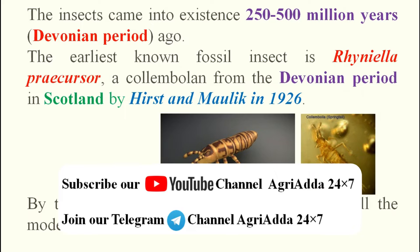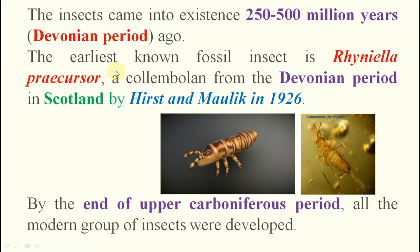The earliest known fossil insect is Rhyniella praecursor — very important for the exam. It belongs to the order Collembola. It was discovered in Scotland by Hirst and Maulik in 1926 during the Devonian period. By the end of the upper Carboniferous period, all modern groups of insects — butterflies, beetles, wasps — had appeared.